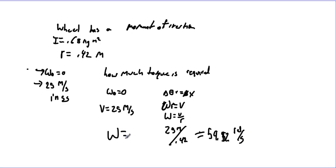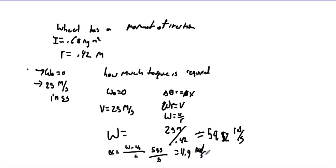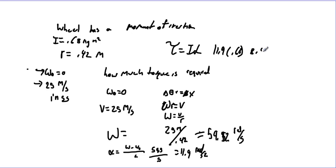So the final angular velocity is 59.2 radians per second. Since it took 5 seconds, alpha equals omega final minus omega initial divided by time: 59.2 divided by 5 equals approximately 11.9 radians per second squared. Now torque equals I times alpha: 11.9 times 0.68 is approximately 8.4 newton-meters. That's the required torque.